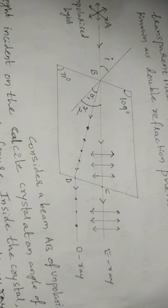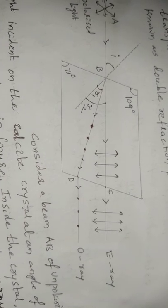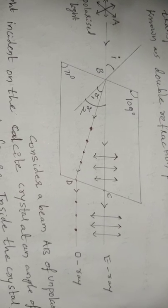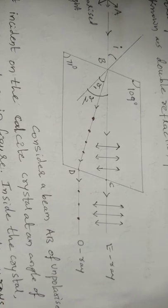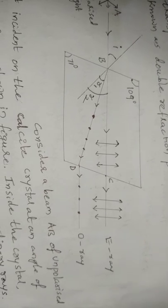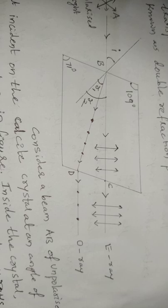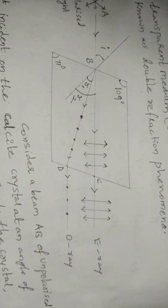As a practical example, keep a dot on white paper and view it through a calcite crystal — two images of the dot appear. When the crystal is rotated, one image remains stationary while the other rotates in the direction of rotation of the calcite crystal. The stationary image is known as the ordinary ray, while the rotating image is the extraordinary ray. This also demonstrates the double refraction phenomenon.